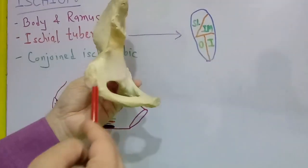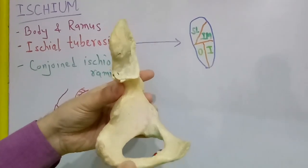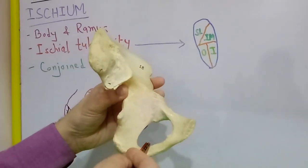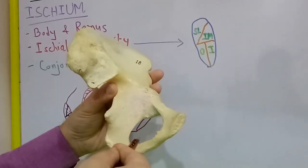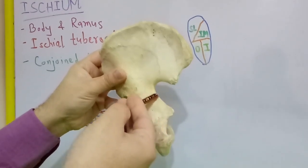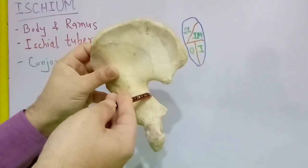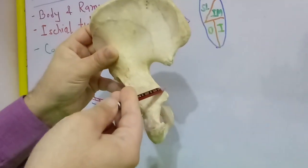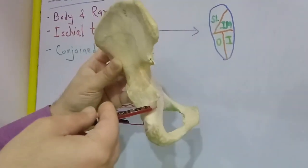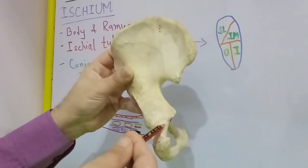The ischial tuberosity gives off the ramus in its lower part. The body has three borders and three surfaces. The anterior border forms the posterior margin of the obturator foramen. The posterior border is a continuation of the posterior border of the ilium. It starts from the lower part of the greater sciatic notch, then we trace it down to the ischial spine, further down there is a smaller notch known as the lesser sciatic notch, and then it ends at the upper end of the ischial tuberosity.